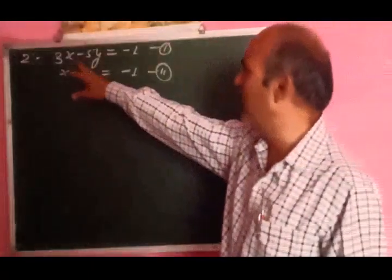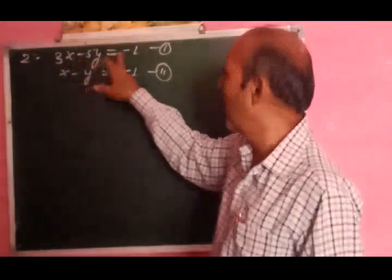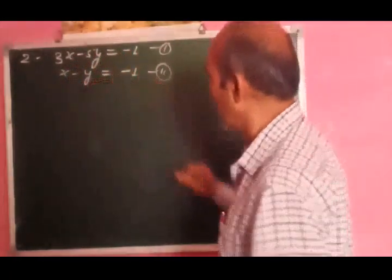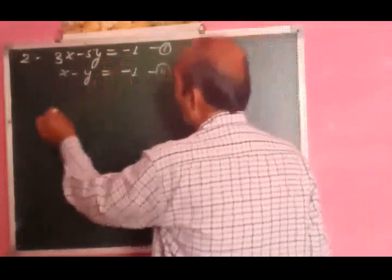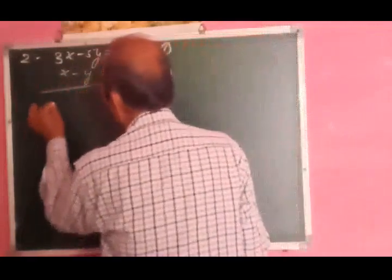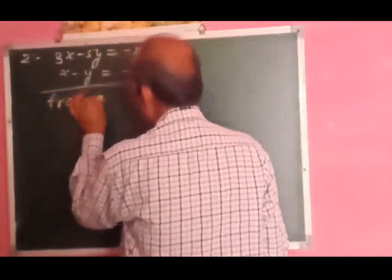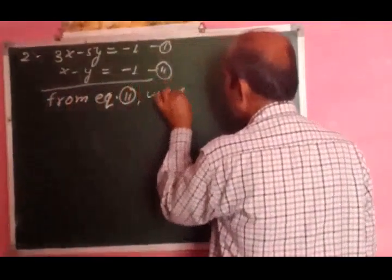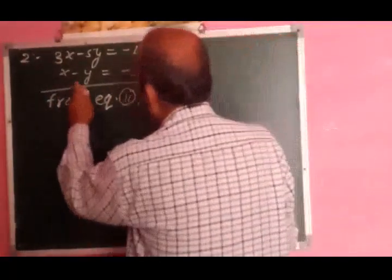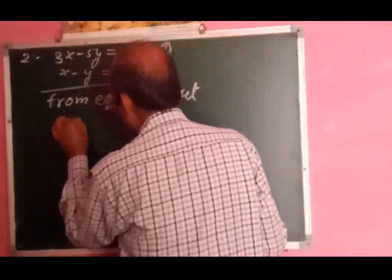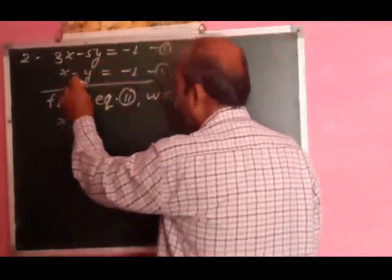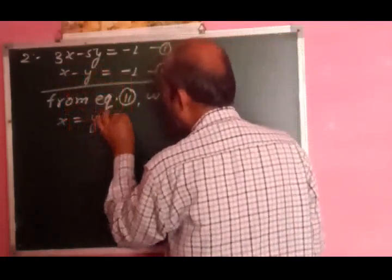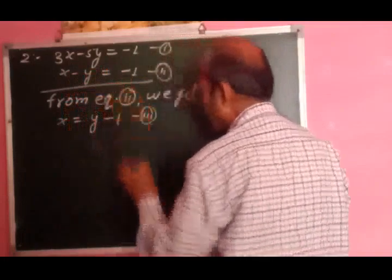Now we start the second example: equation first है 3x - 5y = -1, और equation second है x - y = -1. अब हम second equation से solve करेंगे. From equation second, we get: x = y - 1 — यह आपका third equation हो गया.